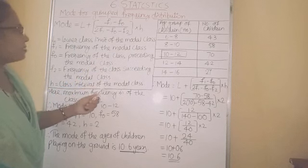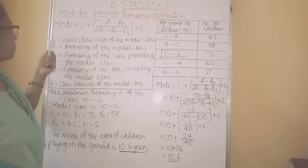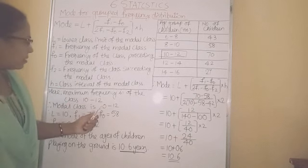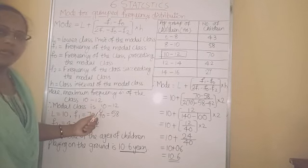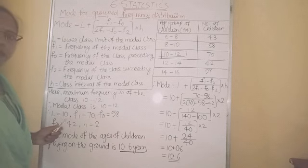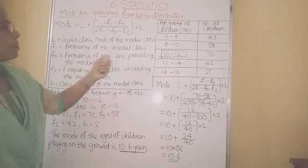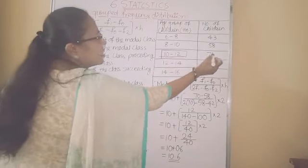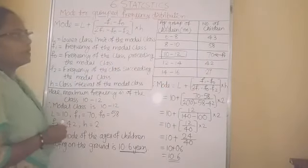Now we will find out all the remaining values which depend on the modal class. First is L — the lower class limit of the modal class. The modal class is 10 to 12, so its lower class limit is 10. Therefore L is equal to 10. F1 means the frequency of the modal class — the modal class is 10 to 12 and its frequency is 70, so F1 is equal to 70.